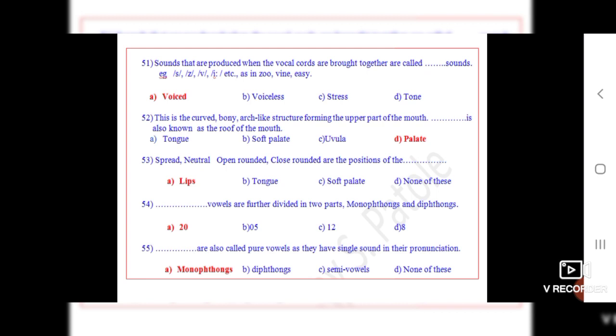Question number 51: Sounds that are produced when the vocal cords are brought together are called dot sounds. For example, sir, were, as in zoo, wine, easy. The correct option is A, voiced.